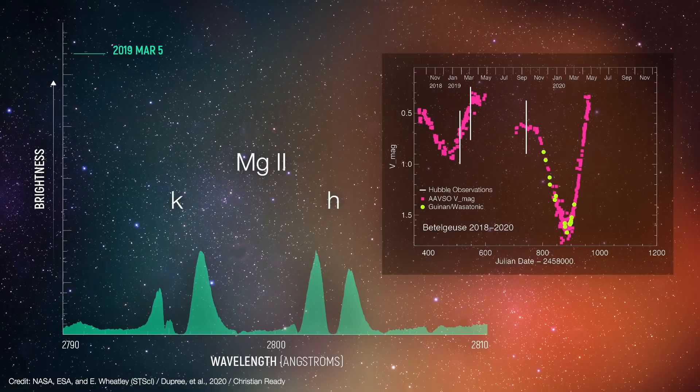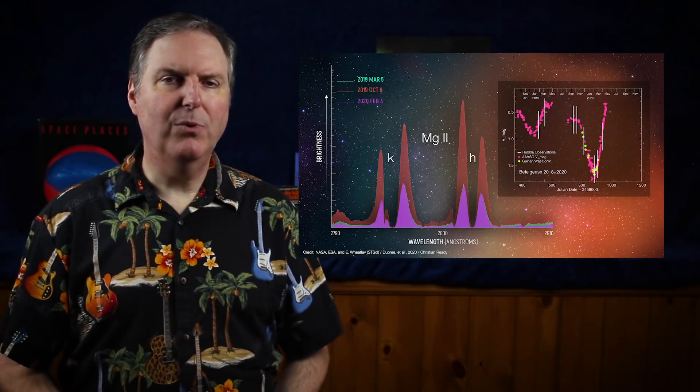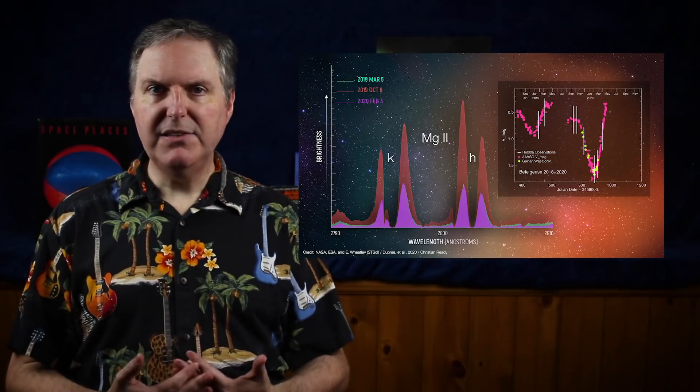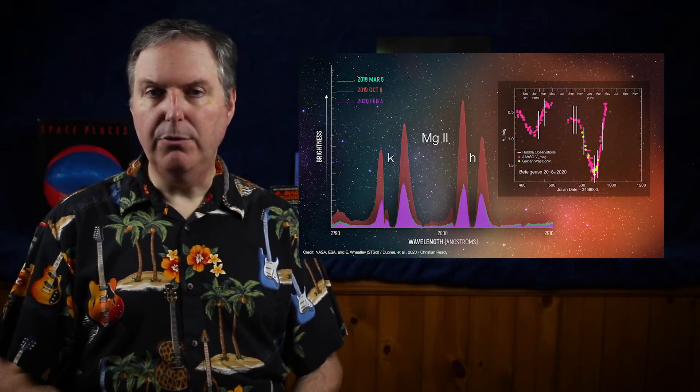In October 2019, the lines brightened along with the background UV emission. Shortly after these spectra were taken, the Great Dimming began. When Hubble revisited Betelgeuse in the winter, the UV emission returned to its normal values. The fact that the 2019 brightening preceded the Great Dimming is interesting because it wasn't just the Magnesium emission lines that brightened, but the overall UV continuum as well.